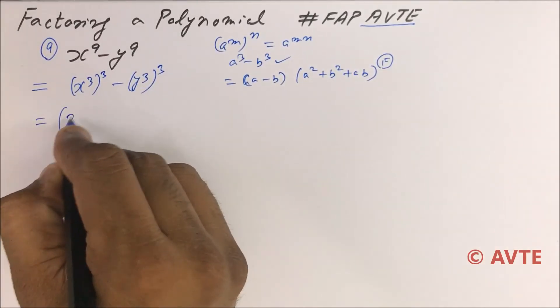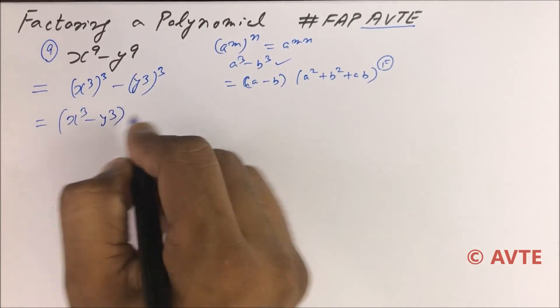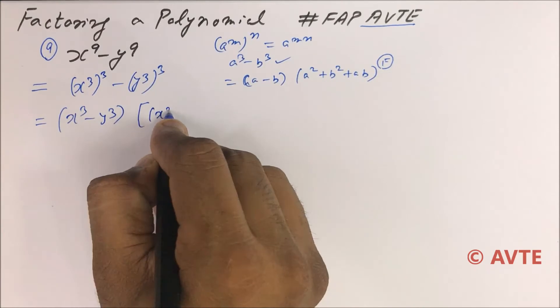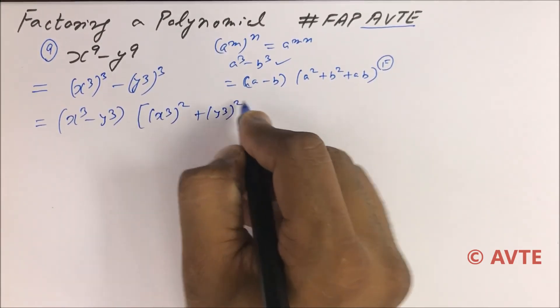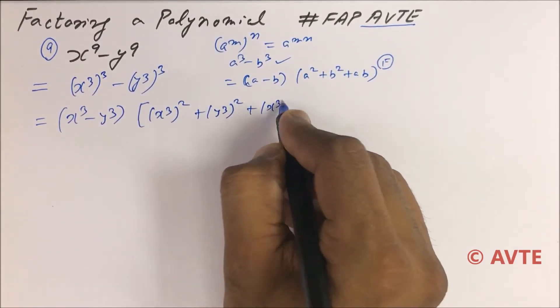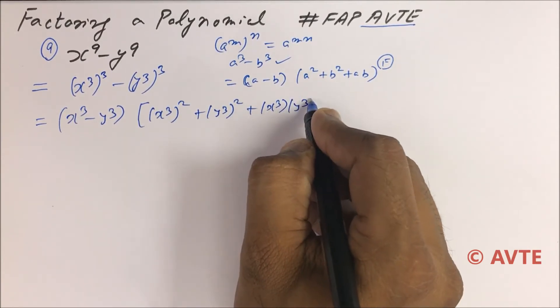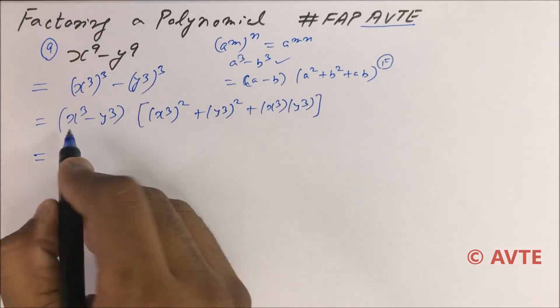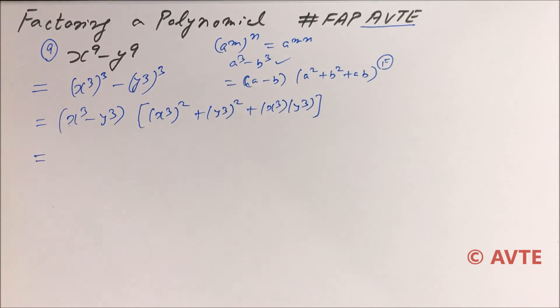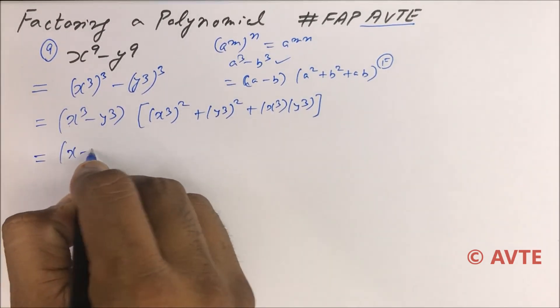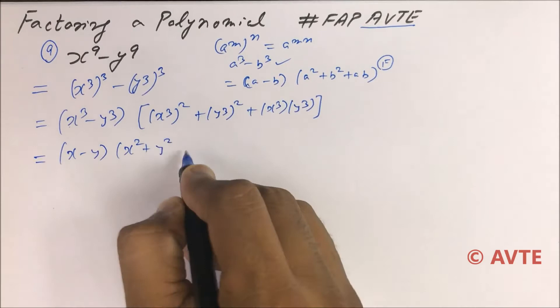So this is x cube minus y cube times x cube square plus y cube square plus x cube y cube. Again, this is x cube minus y cube, so it is x minus y times x square plus y square plus xy.